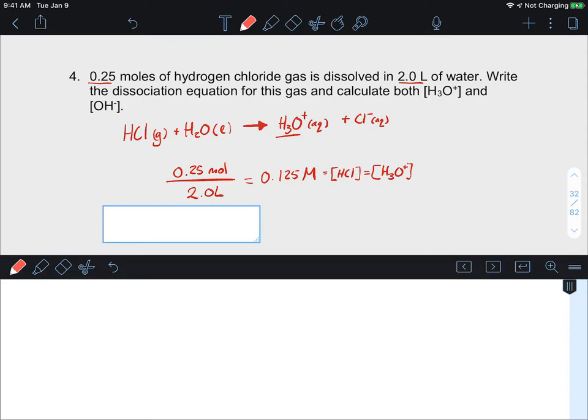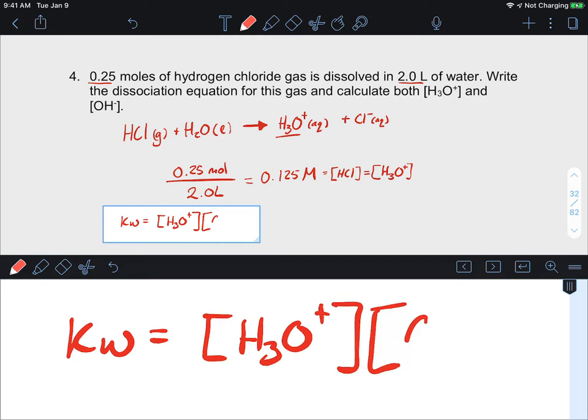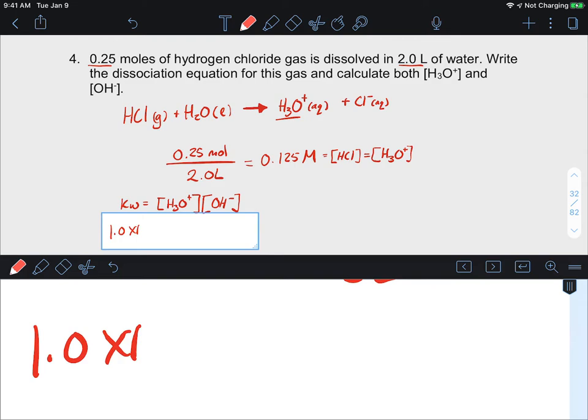That means the concentration of our hydronium. So now we want to calculate the concentration of OH. We need this: Kw equals H3O times OH.